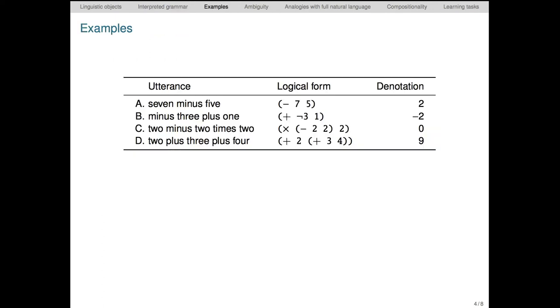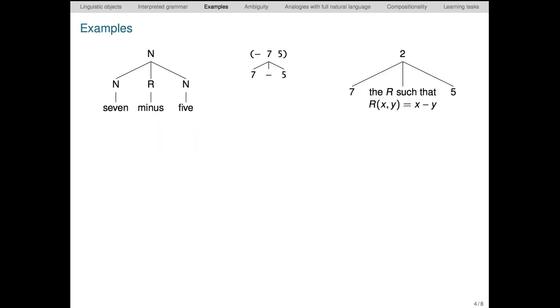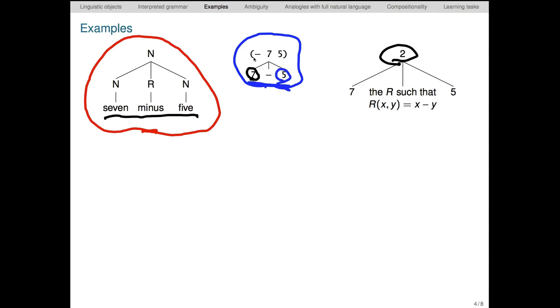Here are a few examples of the objects that the grammar produces. I've left out the syntactic structure though. Here's a fuller picture. The utterance can be read off the leaves of the tree. The tree gives the full syntactic structure. It is translated into this semantic representation. And this representation is interpreted as the number two.